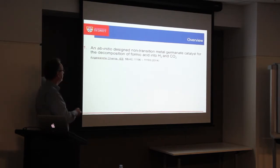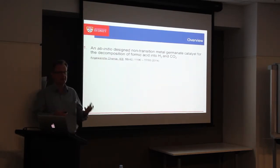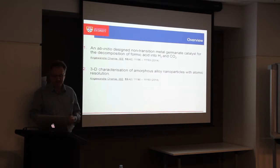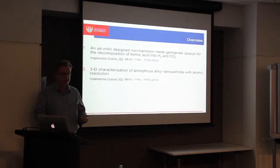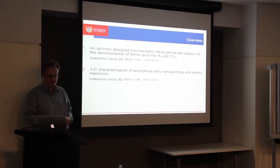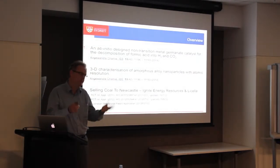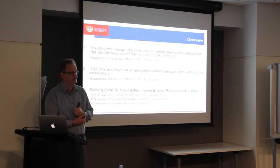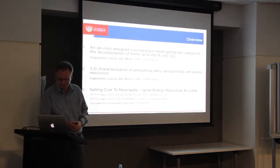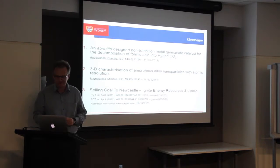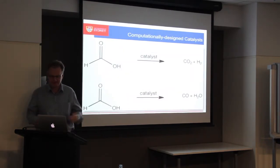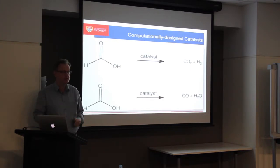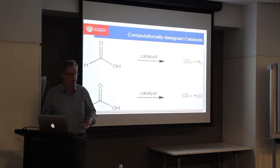The three areas I'll talk about today are catalysts and materials, and then this upscaling thing. The first is about a catalyst — a non-transition metal catalyst — that's able to selectively split formic acid into hydrogen and CO2. The second topic is looking at the characterization of amorphous alloy metals with a new, re-refined technique. And finally, I could not resist selling coal to Newcastle, so I'm trying to make coal better — not just coal better, but better things out of coal.